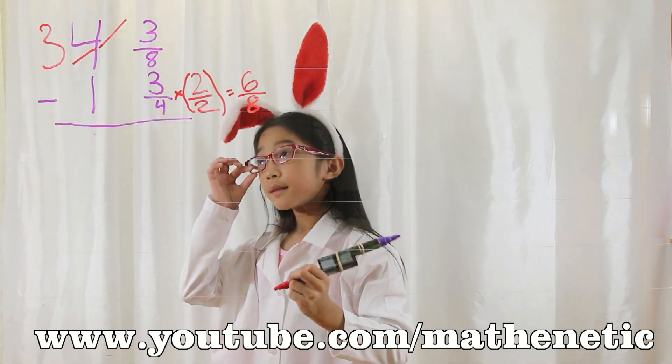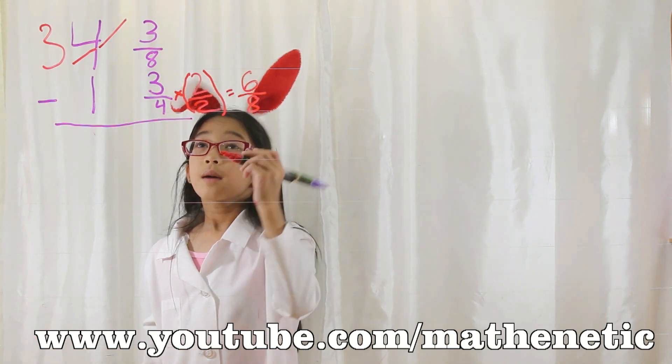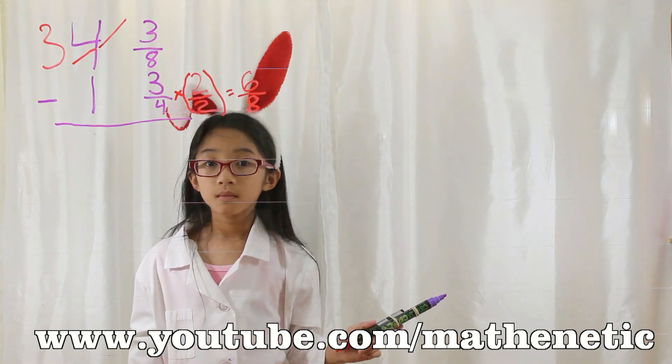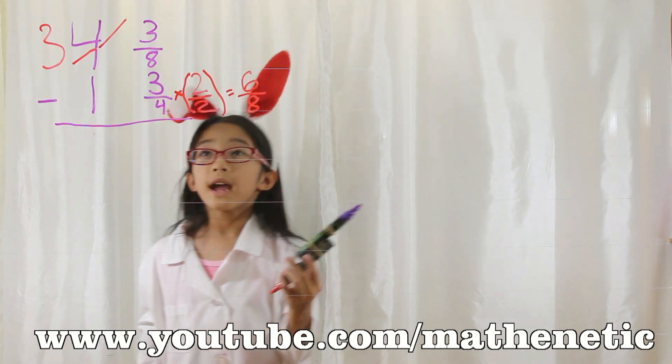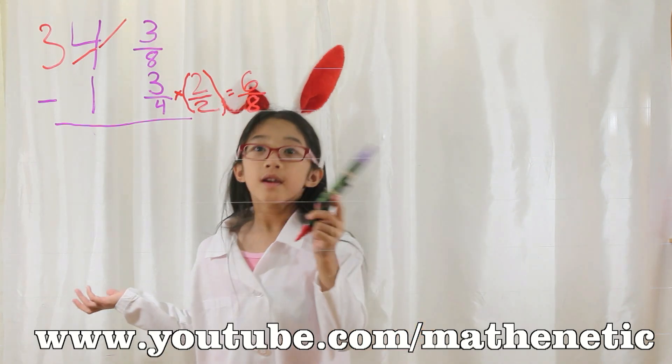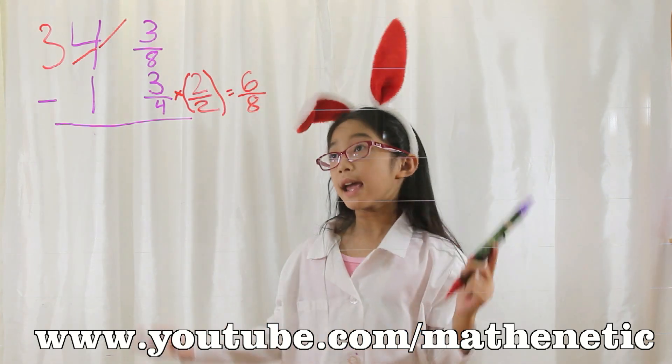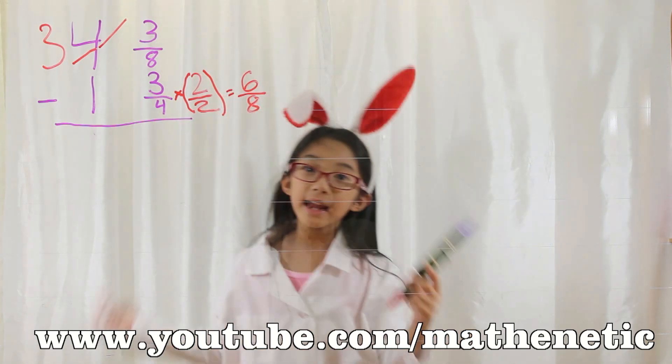So 4 will become 3, and we add 3 eighths plus 8 over 8. Now that we've borrowed 1 from 4, we have to add 8 over 8. But why 8 over 8? Well, in 6 eighths, the denominator is 8. But we needed 1, so it has to be 8 over 8.